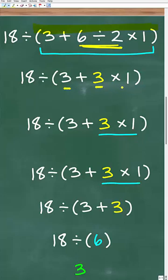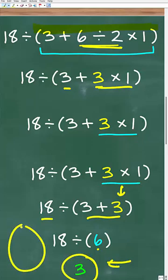We need to do multiplication before we do addition. So 3 times 1 is 3. We're left with 3 plus 3, which of course is 6. Finally, we can do this division. 18 divided by 6 is 3, which is the correct answer.